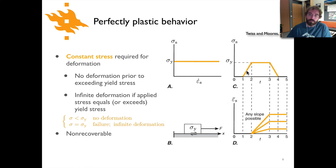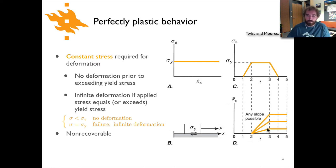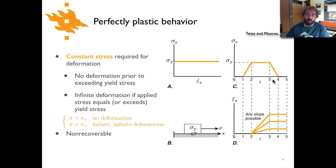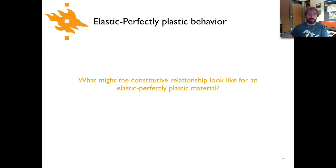Looking at plots of stress versus time and strain versus time: in the period between time one and two where we're below the yield stress there is no deformation. Between two and three where we're at the yield stress, any amount of strain is possible — it depends on how fast you're pulling — but as long as you're at or above the yield stress you can continue to deform. Once you go back below the yield stress, that deformation stays; that's why the strain value doesn't drop back down like it does for elastic behavior.